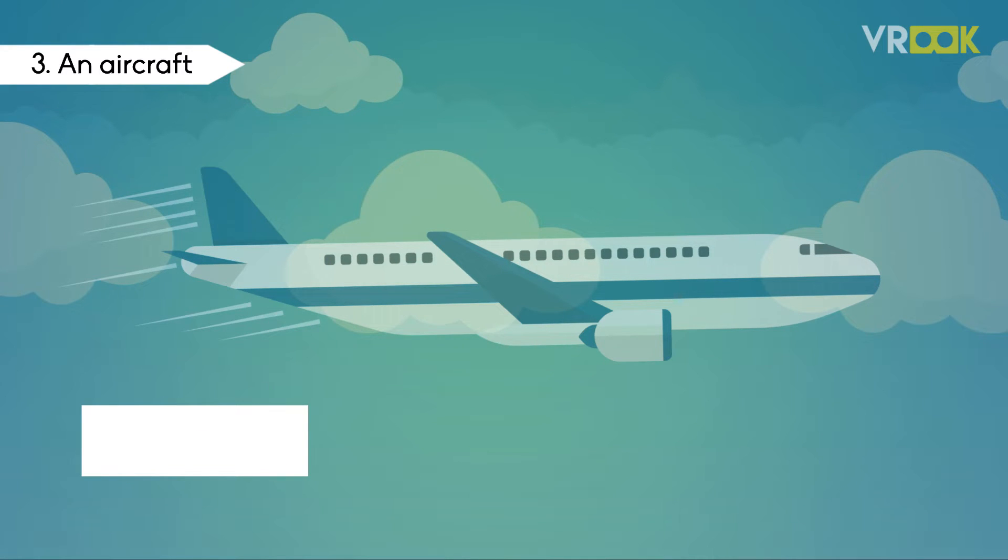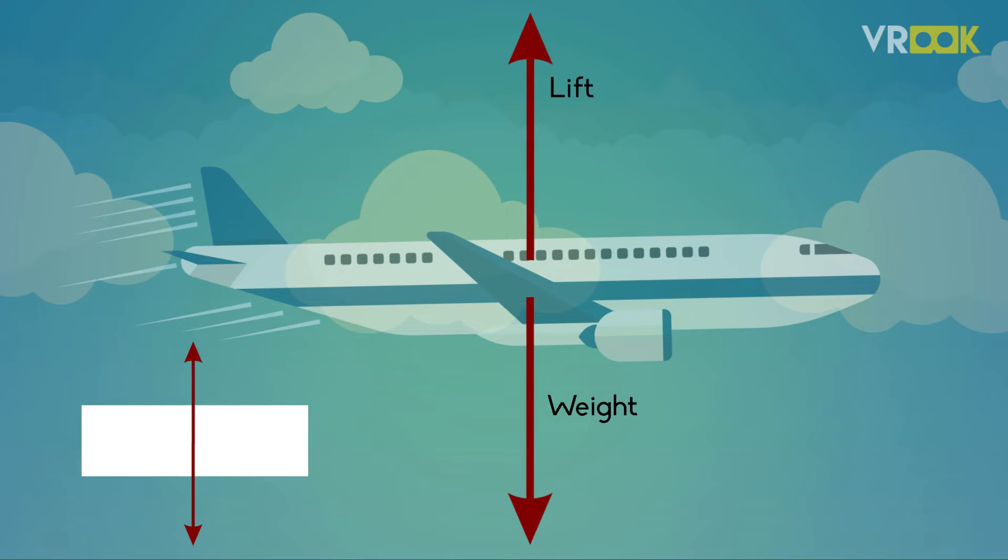The first force to consider is the weight of the aircraft which will act downwards. To maintain the height there will be a lift. This acts in the opposite direction of weight, so we draw that force.